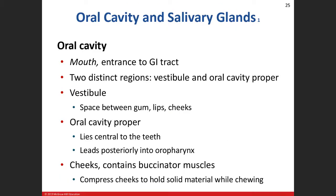The oral cavity has two regions. The vestibule is the space between your teeth, gums, lips, and cheeks. The oral cavity proper is behind the teeth, just in front of the oral pharynx. In the oral cavity proper, the bolus gets pushed back to enter the oral pharynx. The buccinator muscle contracts to hold the cheeks flush against the teeth so food doesn't fall out into the vestibule.